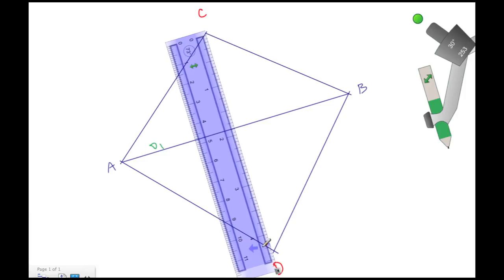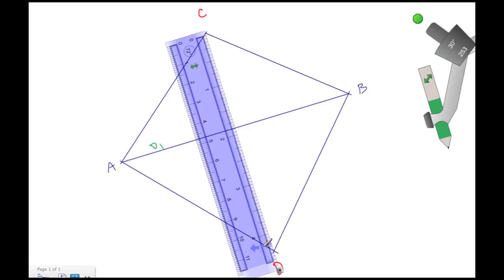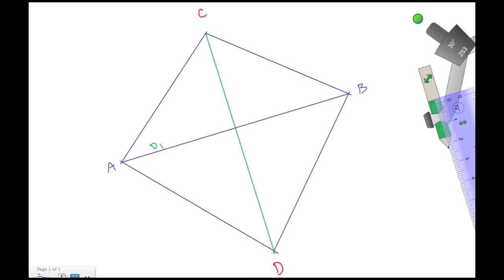Let's swing this over. That there should be good enough for D. Once we've drawn or finished our construction, let's go ahead and label this diagonal here D2.